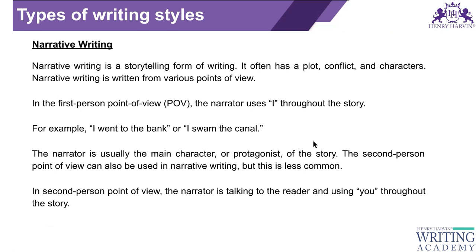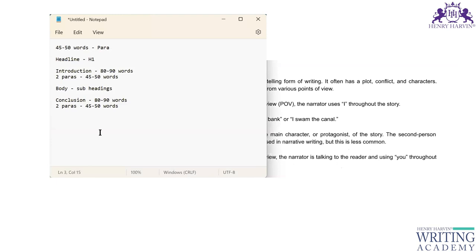Next is narrative style. Narrative means you are narrating something. Here you develop characters, develop conversation between those characters, develop conflict and drama, and include emotions. That is narrative style of writing. When we work on narrative, there are three types of point of view: first person, second person, and third person.